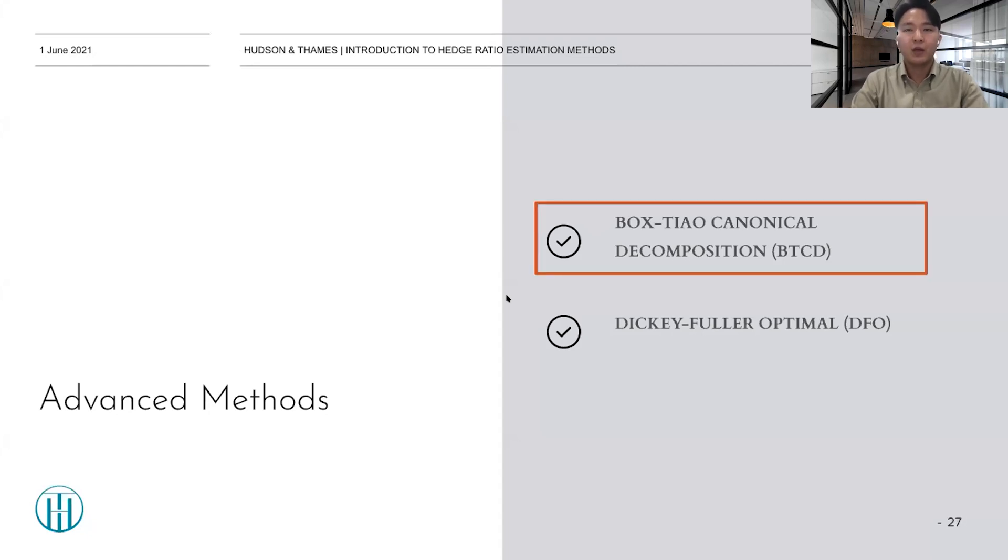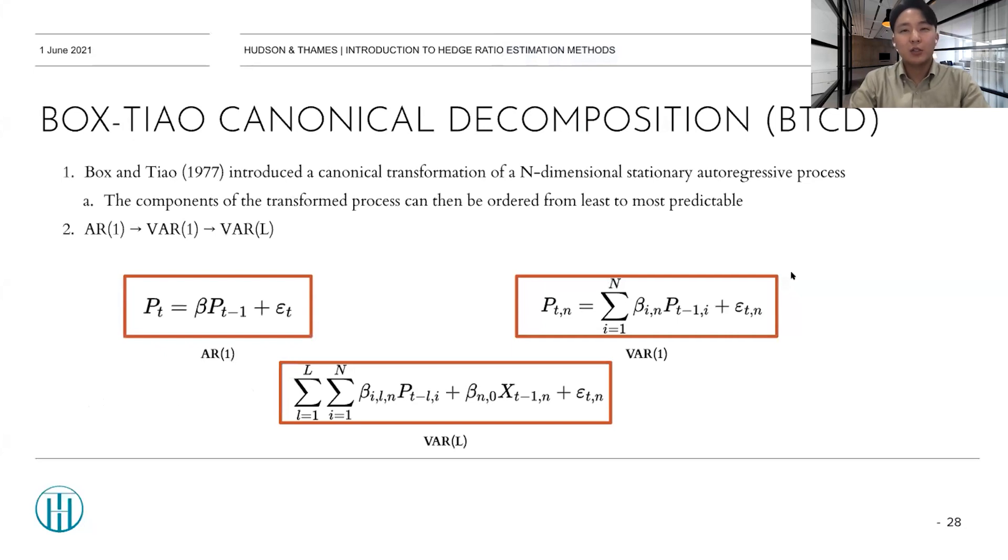So first, BTCD. So Box Tiao introduced a canonical transformation of an n-dimensional stationary autoregressive process. And the components of the transformed process can be ordered from least to most predictable. And the estimation goes as follows. For the VAR(L) equation, which is an extension version of VAR, which we call a forecasting equation here. And this method fits beta and it estimates PT hat from the beta. So with this estimated PT, it undergoes a decomposition and solves for optimal weights.